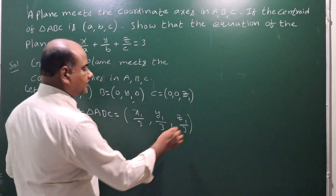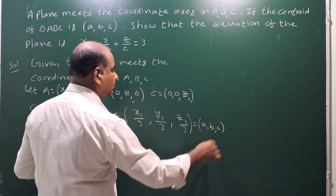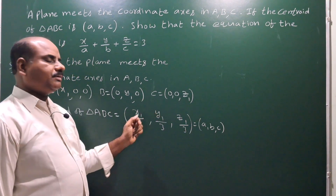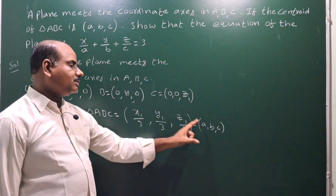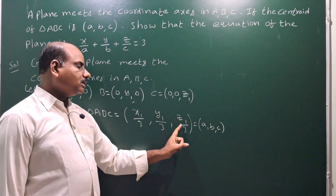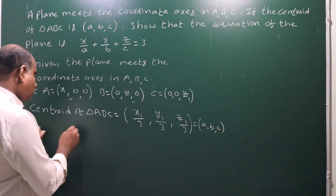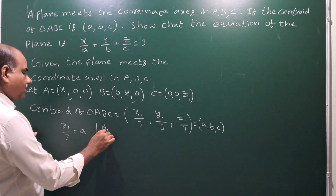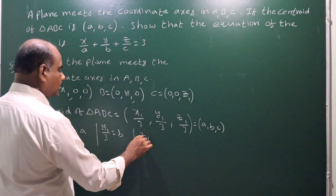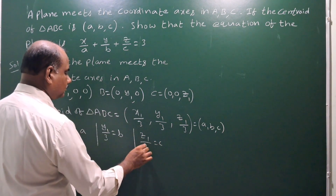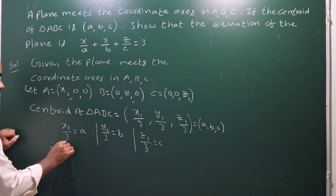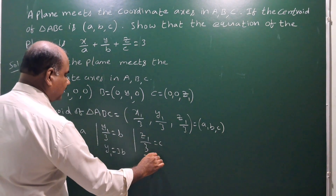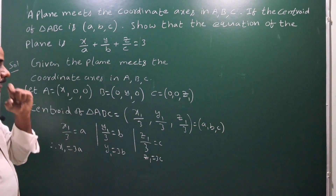The centroid is given as (a, b, c), so we equate corresponding elements. Therefore: x1/3 = a, y1/3 = b, z1/3 = c. Solving these: x1 = 3a, y1 = 3b, z1 = 3c.